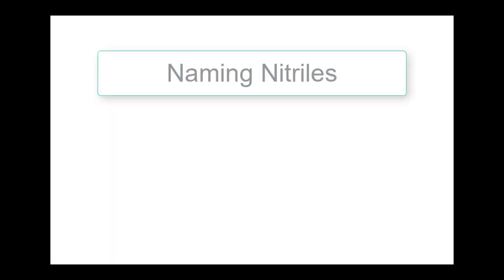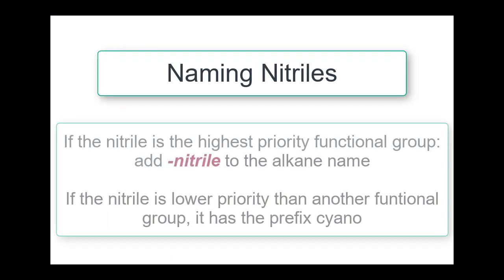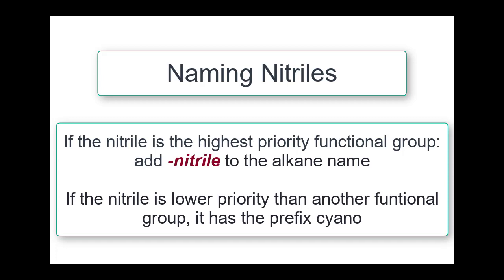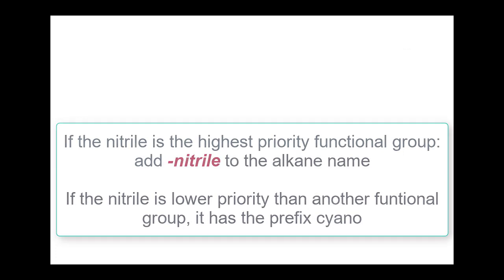In this video we're going to name nitriles. So for the IUPAC naming, essentially we're going to take the alkane name and just add the name nitrile at the end of it.